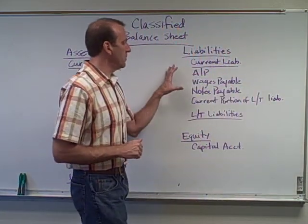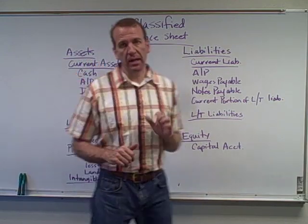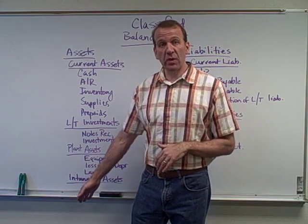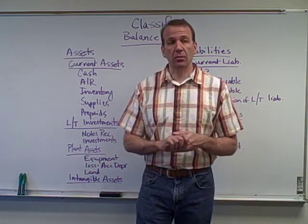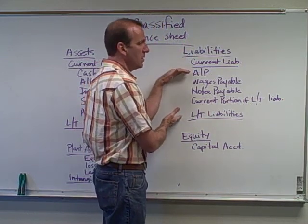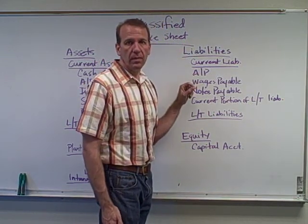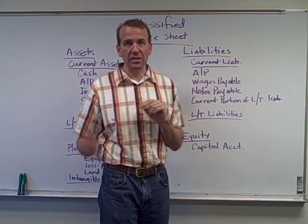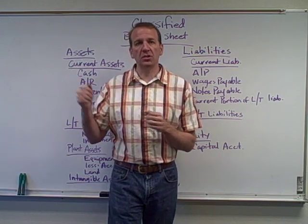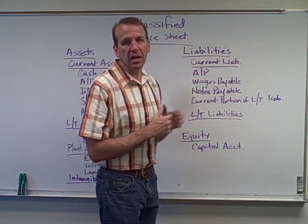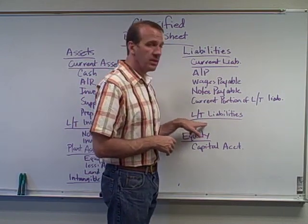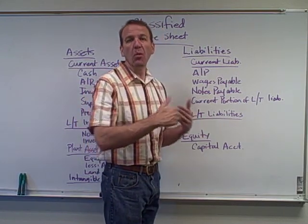Now let's move on to liabilities. Liabilities are easier than assets, because assets have several categories and sometimes an 'other' category too. Liabilities only have two: current liabilities — things we owe that we have to pay off within the next year — and long-term liabilities, which are things we have more than a year from now to pay off.